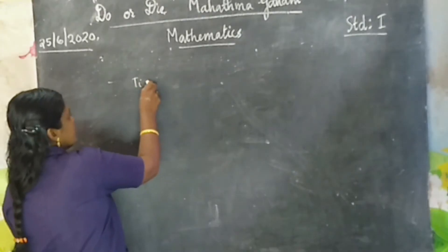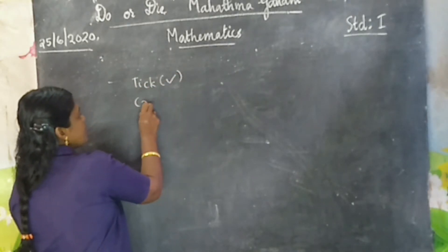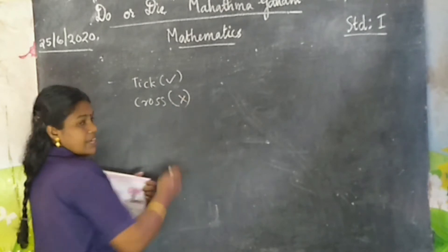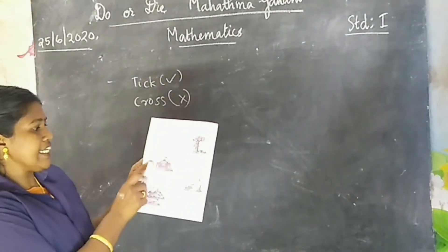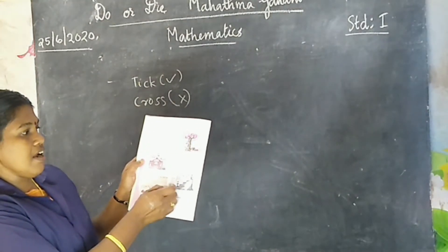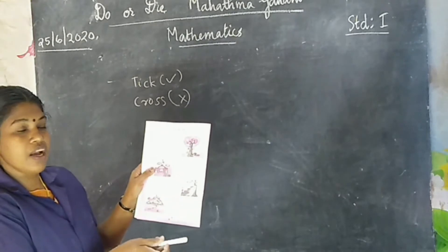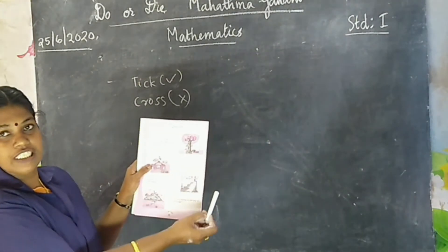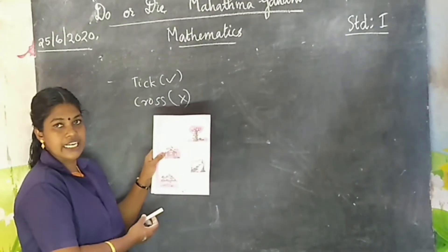Tick means this symbol and cross means this symbol. Understand? Then second question. First question you know it. Take the bird on the top of the tree.